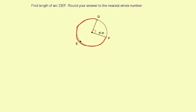So we know we have a right angle here, which means this angle is going to be 270 degrees. And that's actually the arc measure of DEF. We need to find the arc length, so we're going to use an arc length formula.